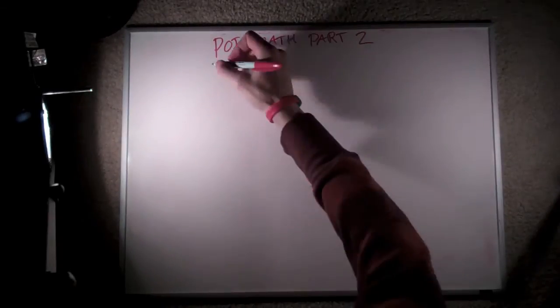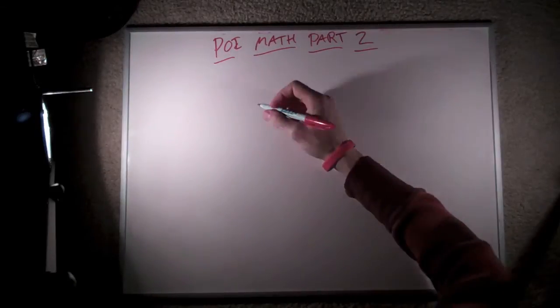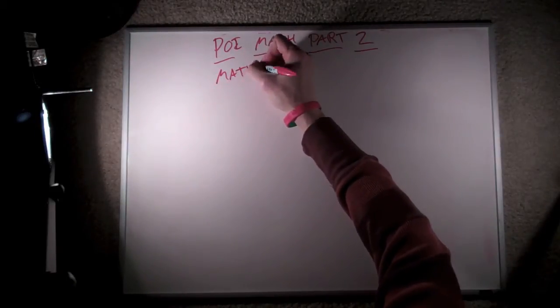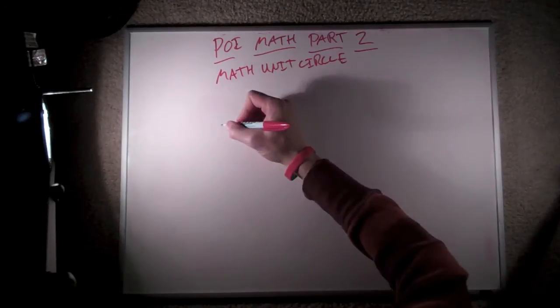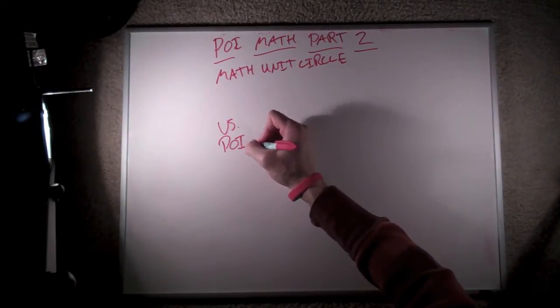Hey guys, thanks for all the great feedback from last week's POI math video. This week, we're going to tackle POI math part 2. That is, the difference between the unit circle as we understand it in algebra and geometry, and the unit circle as we understand it with POI.